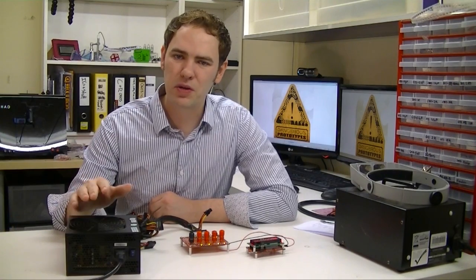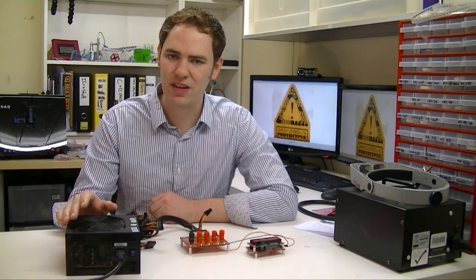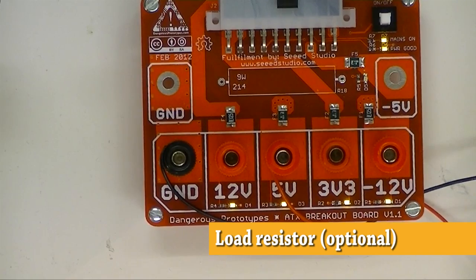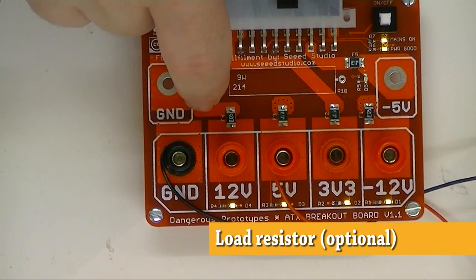As a safety measure many older computer power supplies needed a load on the 5 volt pin before they'd actually start up and stabilize. For that reason a lot of power supply conversions include a 9 watt 10 ohm resistor on the 5 volt pin.